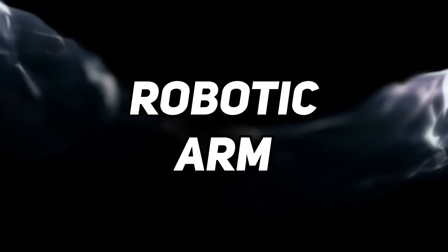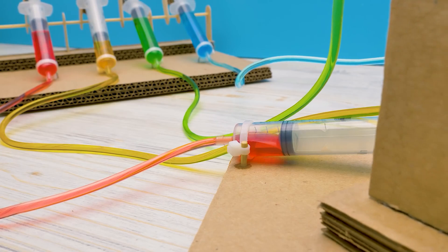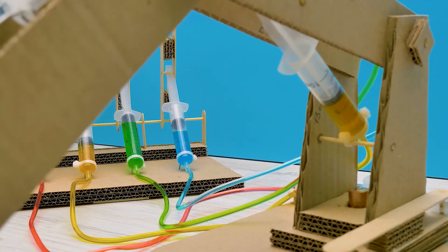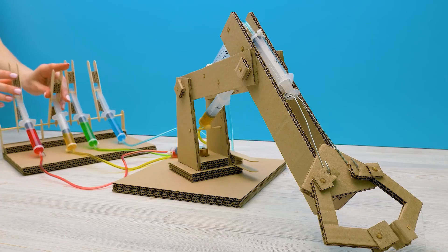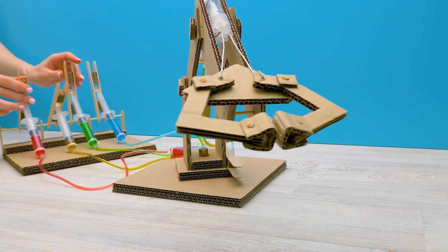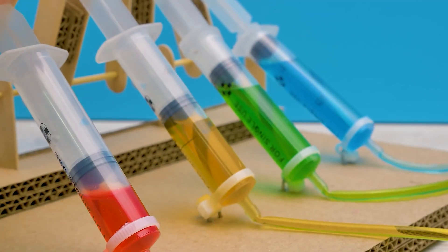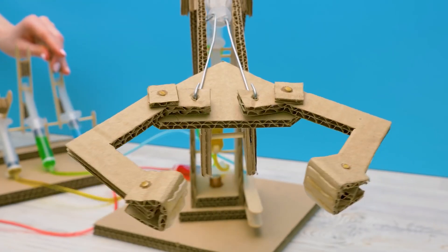Number six: Robotic Arm. The sixth project is a Robotic Arm which is a robot that can lift and move objects. You can make a Robotic Arm from a cardboard tube, four popsicle sticks, four syringes, some water and some tubing.